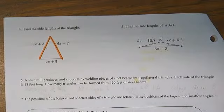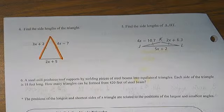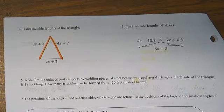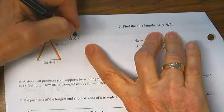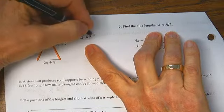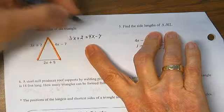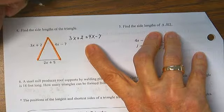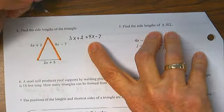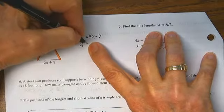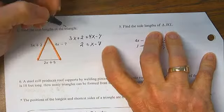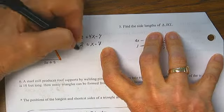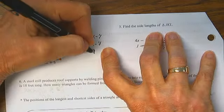So we set this up as 3x plus 2 equals 4x minus 7. Subtract 3x from each side. 2 equals x minus 7. Add 7 to each side. x equals 9.